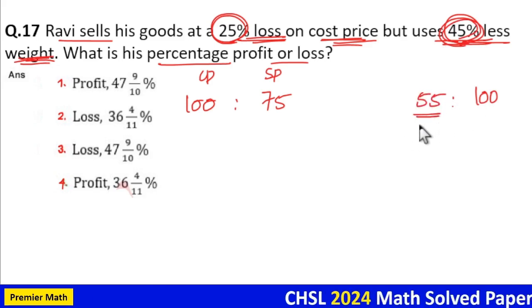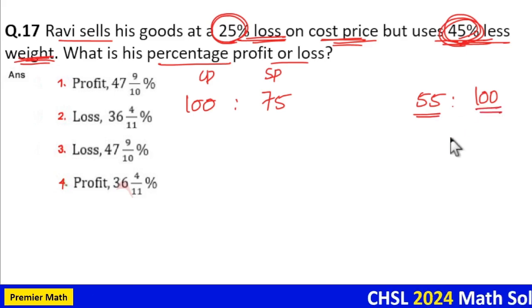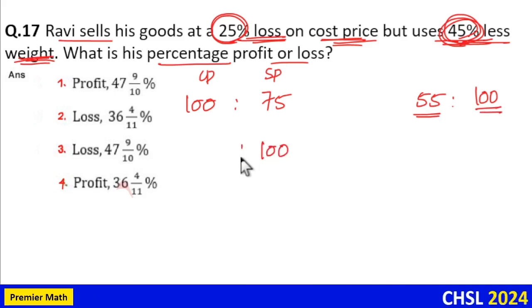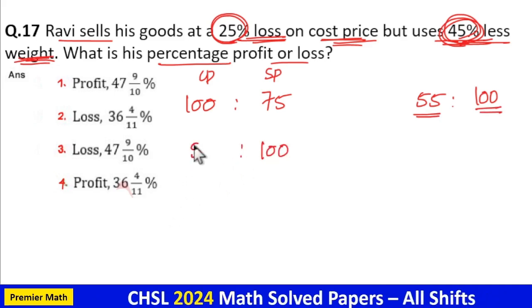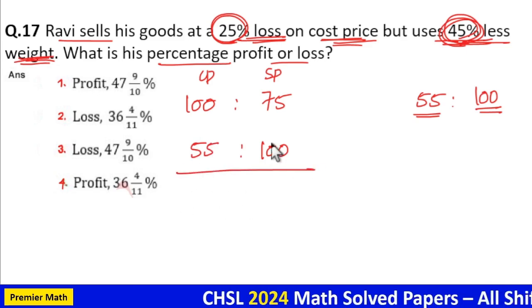That is he only costs 55 kg but he will get 100 kg price. Customer will pay for 100 kg but he only gives 55 kg. So he only costs 55 kg.